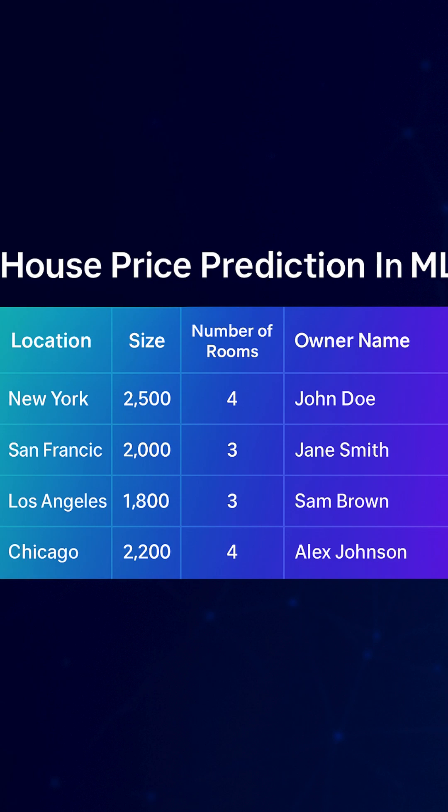Location, size, and number of rooms are directly related to price — these are important features. But owner name and paint color won't really help the model predict price, so we can safely drop them. This is exactly what feature selection does: it keeps the most useful information and removes the noise, so our model learns better and faster.